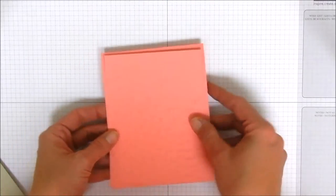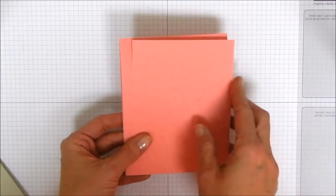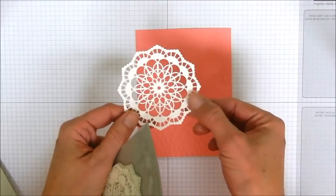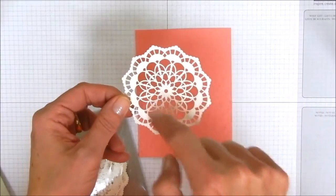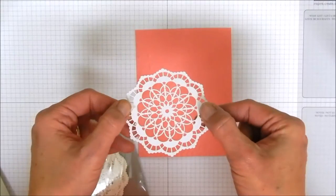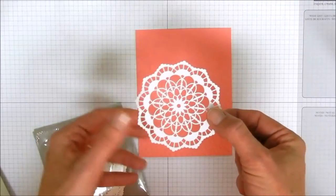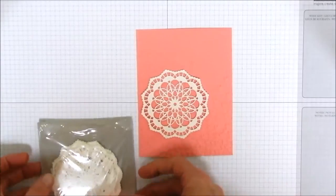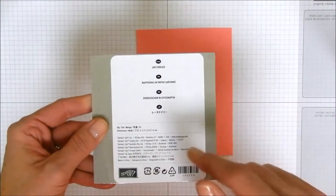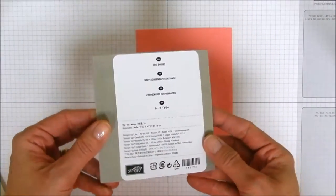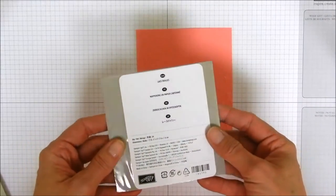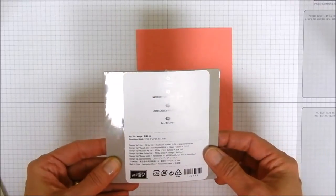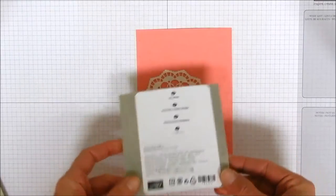So for our embellishments on the front of the card, we are going to be using one of these beautiful little doilies and these things are pretty cool. They're very vanilla on one side and whisper white on the other. So you can choose to use either one. We're going to use the very vanilla side today. Now these are available in the occasions catalog. I think they're part of the falling in love suite. These are lace doilies and it looks like you get 24 per package. So it's a good value.